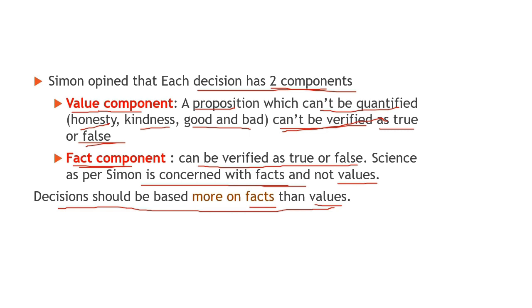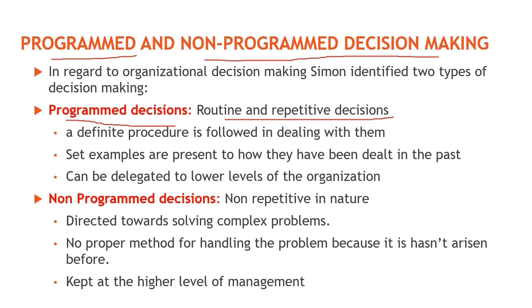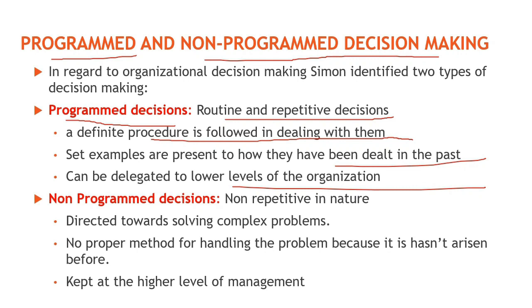Organization mein decision making ke perspective mein, Simon ne two types of decision making bataye the — programmed and non-programmed decision making. The first type is programmed decisions — woh jo routine and repetitive decisions hote hain. Yeh decisions organization mein routine basis par liye jate hain. A definite procedure is followed in dealing with them, aur past mein bhi in problems se deal kiya ja chuka hai. Kyunki programmed decisions mein routine decisions aate hain, yeh hum lower level of organization ko bhi delegate kar sakte hain.